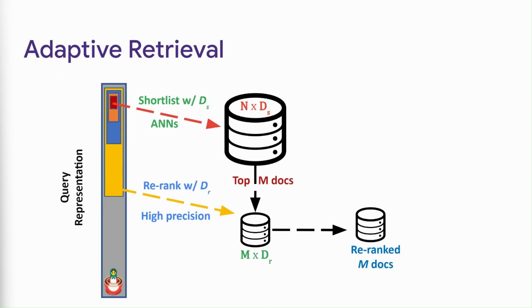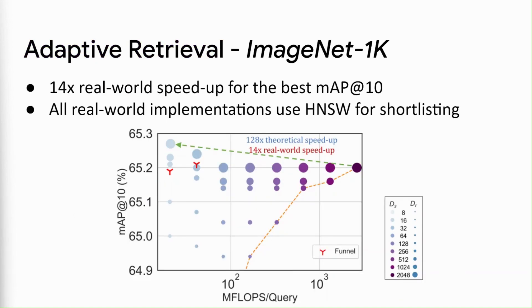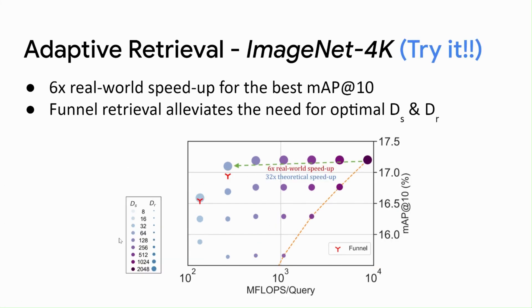Accurate multi-granularity of MRL enables adaptive retrieval for web-scale search. Here, we use low-dimensional representations for initial shortlisting, followed by higher-dimensional representations for high-precision re-ranking. Adaptive retrieval using Matryoshka representations leads to up to an order of magnitude real-world speedups for the same mAP@10 compared to single-shot retrieval. This also scales to larger datasets like ImageNet 4K, which we introduced as a retrieval benchmark in this paper.